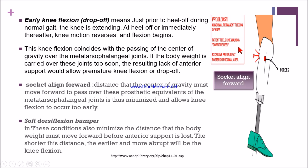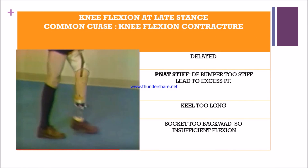The patient may complain of a sensation described only during downhill walking, and excessive pressure at the posteroproximal area due to the forward-aligned socket. If the dorsiflexion bumper is soft, it also minimizes the distance the body must move forward before anterior support is lost, causing the patient to flex their knee abruptly — resulting in premature knee flexion.